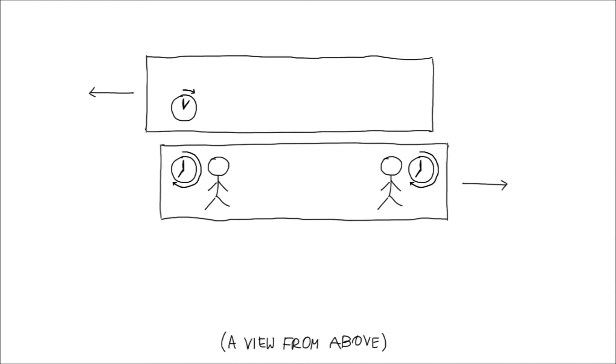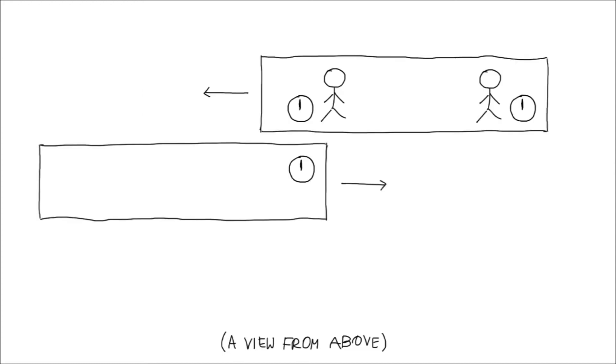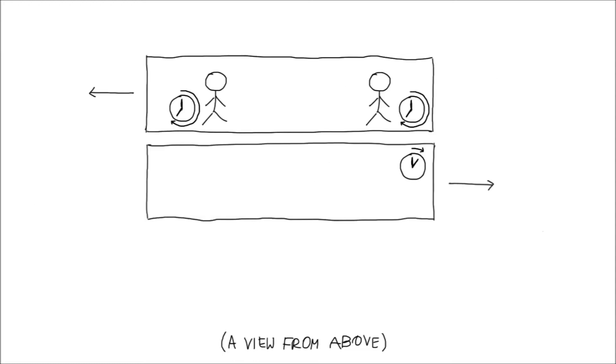Of course, we could carry out exactly the same reasoning in which you and she switch places. So, from her point of view, your clocks tick slower than hers. Surprisingly, there is no paradox here because her clocks do not appear synchronized to you due to relativity of simultaneity, which we will discuss shortly.